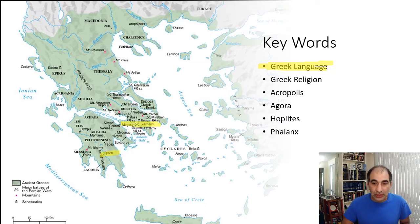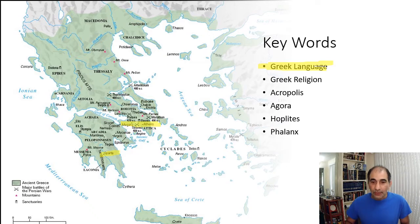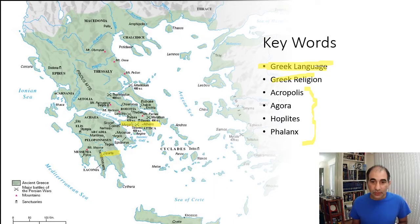The next things I want to talk about are Acropolis, Agora, Hoplite, and Phalanx — go ahead and write all those words down. These are things that were typical of many Greek city-states. They had the basic functions, things you needed to function: an Acropolis, an Agora, Hoplites, and a Phalanx, which I'm going to explain on the next slide.